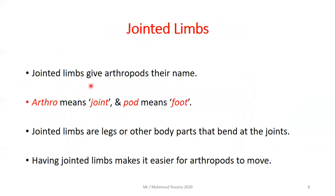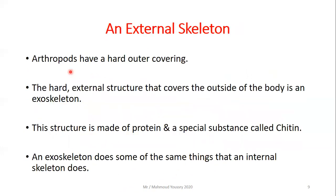Jointed limbs give arthropods their name. 'Arthro' means joint and 'pod' means foot. Jointed limbs are legs or other body parts that bend at the joints. Having jointed limbs makes it easier for arthropods to move.